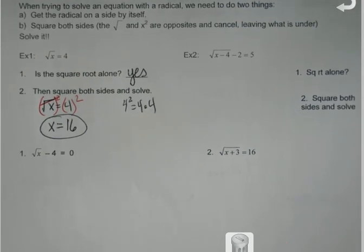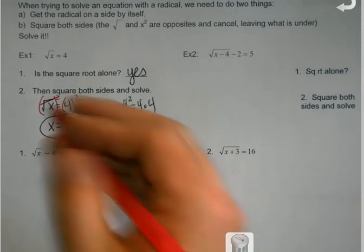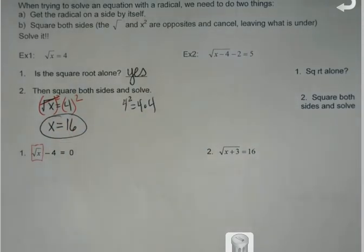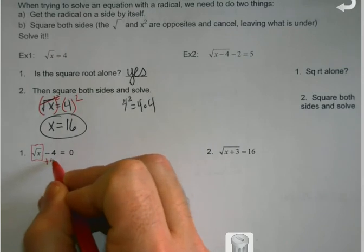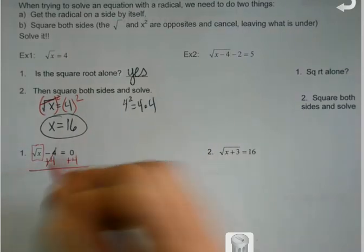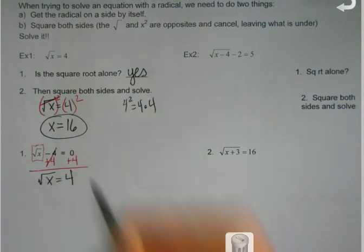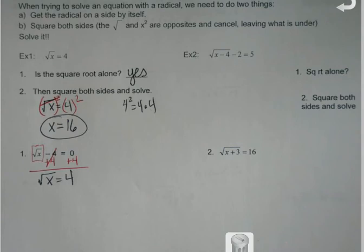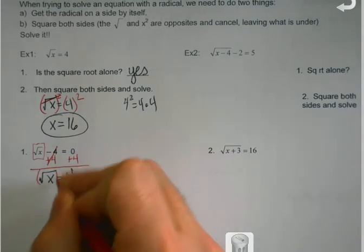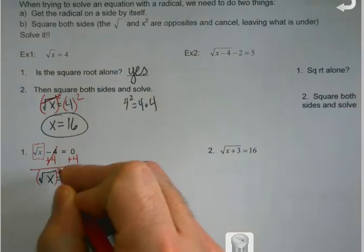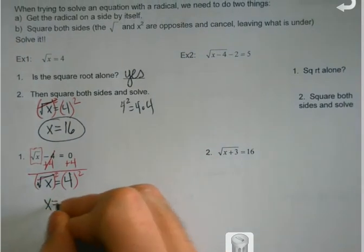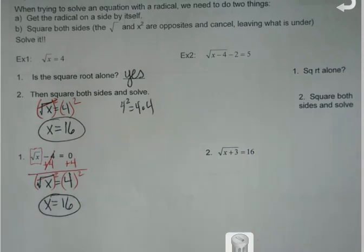But you're not always going to have the radical on the side by itself right away. My first job is always to try and get that radical term alone. So if there's something outside the radical, like the minus 4 is here, I treat it just like an equation. I do the opposite. Because then I can go ahead and just add that 4 out, and now it looks basically the same thing as example 1. Once that radical's alone, I just square both sides and get my solution.